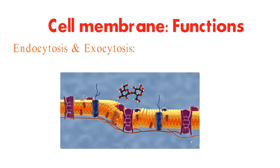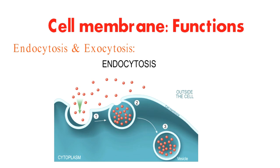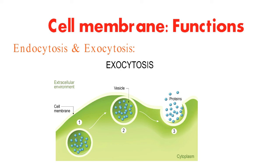When substances are too big to pass through the membrane, cells have ingenious methods. Endocytosis engulfs particles by forming vesicles, while exocytosis releases materials outside the cell. These processes are essential for nutrient intake, waste removal, and cell communication.